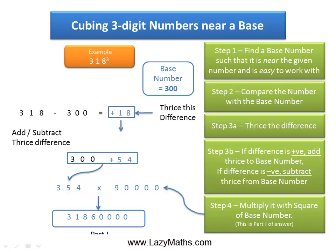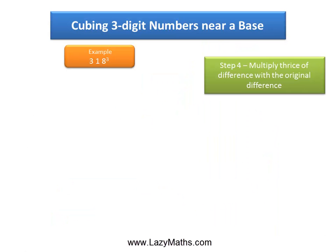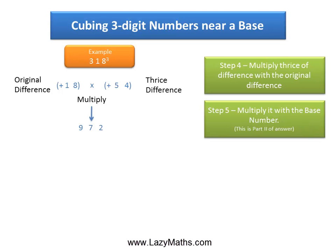Now let's look at how to get Part 2 of the answer. We go back to the original difference, which is 18, the difference between 318 and the base number 300. Then we have three times that difference, which is 54. We multiply the two differences together: 18 times 54 gives us 972. We take 972 and multiply it by the base number, 300, and we get 291,600. This becomes Part 2 of the answer.